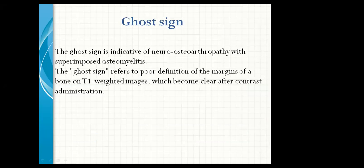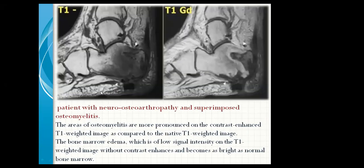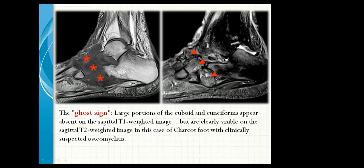Ghost sign. The ghost sign is indicative of neuro-osteoarthropathy with superimposed osteomyelitis. It refers to poor definition of the margin of the bone on T1-weighted image, which becomes clear after contrast administration. In this patient with neuro-osteoarthropathy and superimposed osteomyelitis, the areas of osteomyelitis are more pronounced in the contrast-enhanced T1-weighted image compared to the native T1-weighted image. The bone marrow edema, which is of low signal intensity on T1-weighted image without contrast, becomes as bright as normal bone marrow after enhancement. A large portion of the cuboid and the cuneiform appear absent on sagittal T1-weighted image but are clearly visible on the sagittal T2-weighted image in cases of Charcot foot with clinically suspected osteomyelitis.